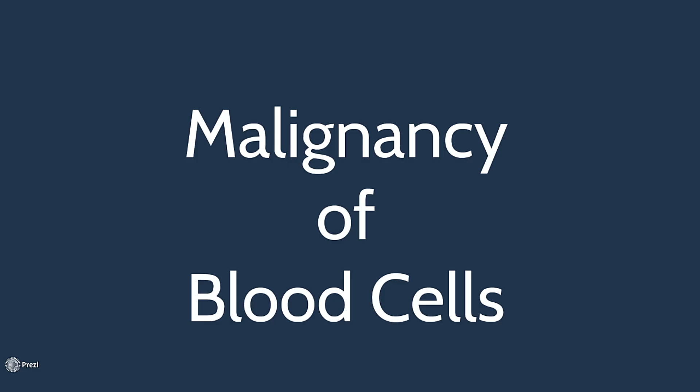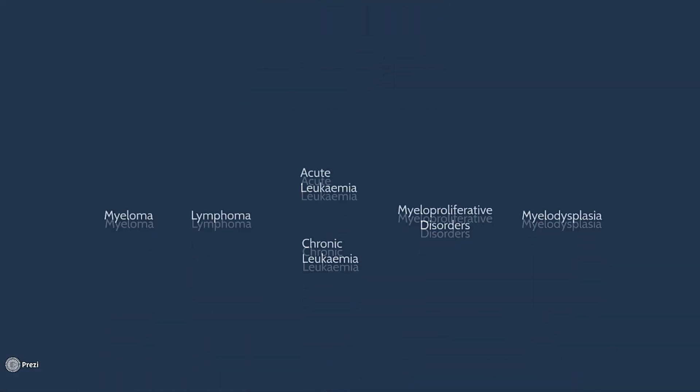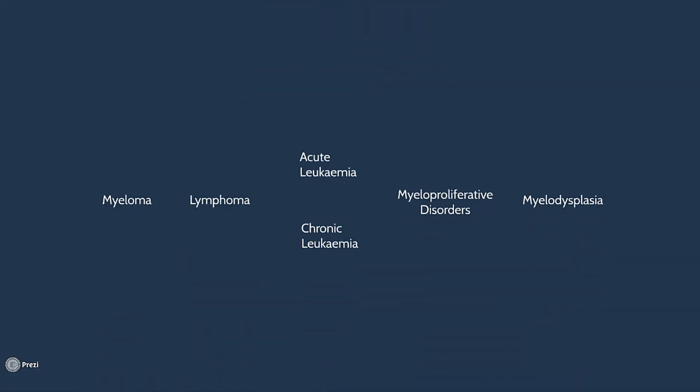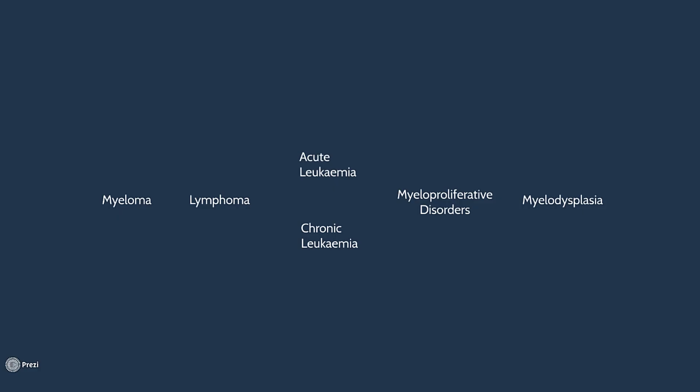People are often very confused by malignancies in haematology. Today we're going to do a very quick overview of the main diseases, just the absolute basics. By the end of the video you should be able to describe each of these diseases in just one sentence. If you want, you can pause the video here and try that for yourself first.